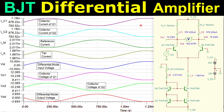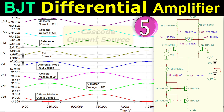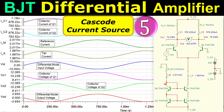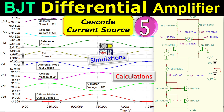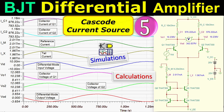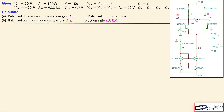Welcome to a new video about differential amplifiers using BJTs. This is example number five. We continue with the improvement of our current source for our differential pair. In this case we look at the cascode current source. We will see the necessary calculations step by step and also verify our calculations using TSPICE simulations.